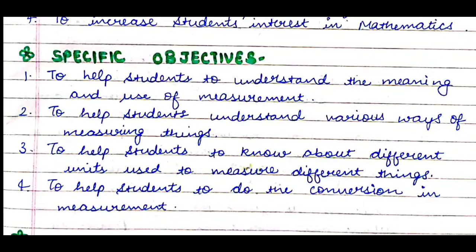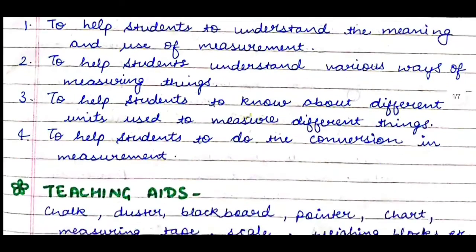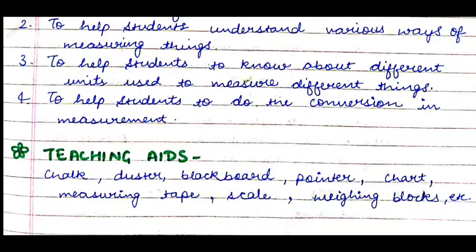The specific objectives are: first, to help students understand the meaning and use of measurement; second, to help students understand various ways of measuring things; third, to help students know about different units used to measure different things; fourth, to help students do the conversion in measurement. These are our aims — the things we'll cover in our chapter. After that, we write teaching aids: the materials used for teaching.